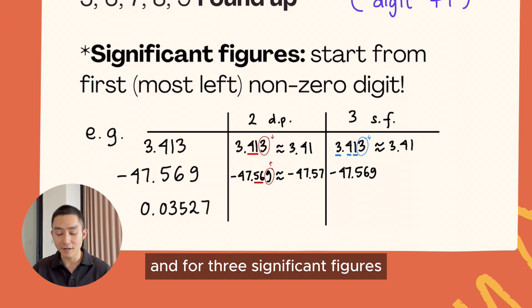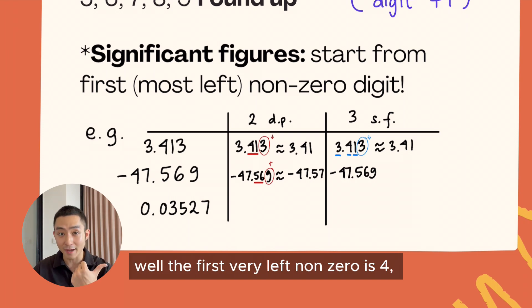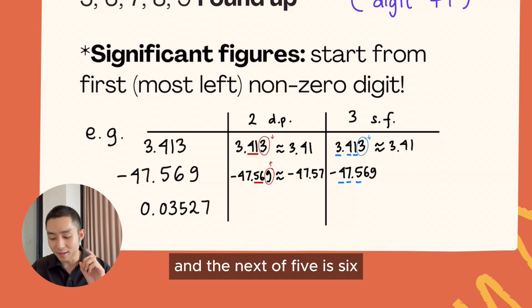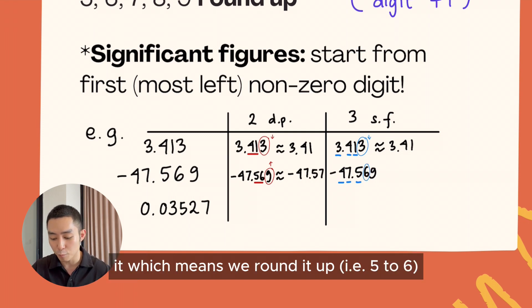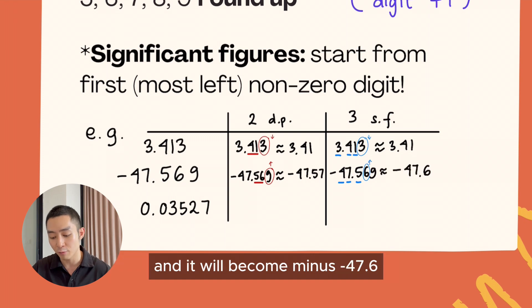For three significant figures, the first very left non-zero is 4. So we start 4, 7, and 5. The next digit after 5 is 6, which means we round it up, and it will become -47.6.